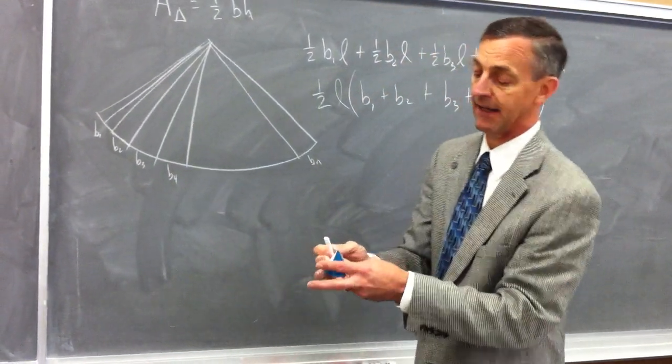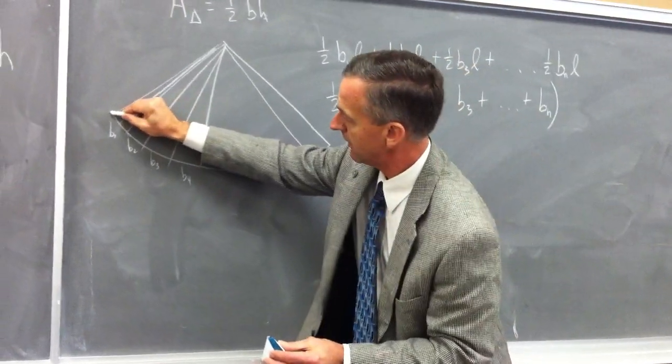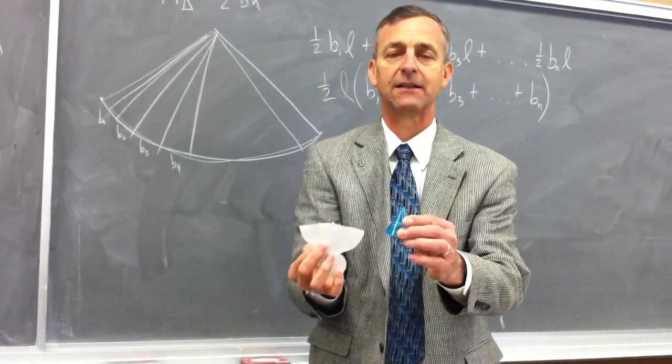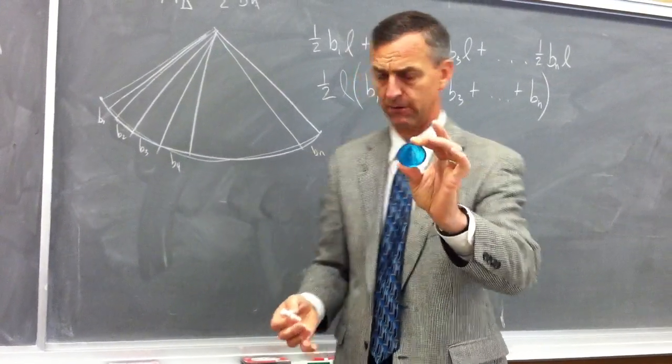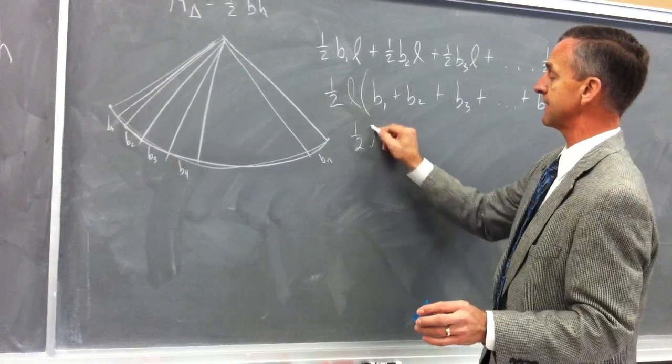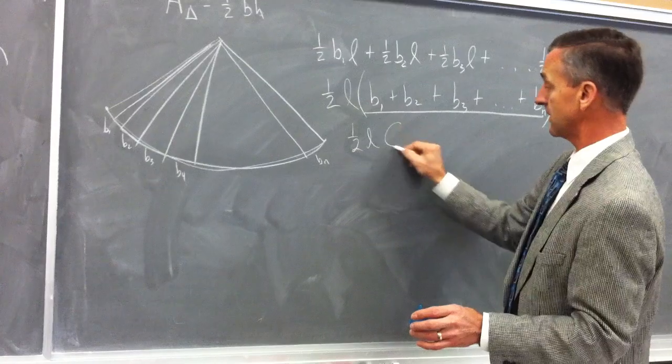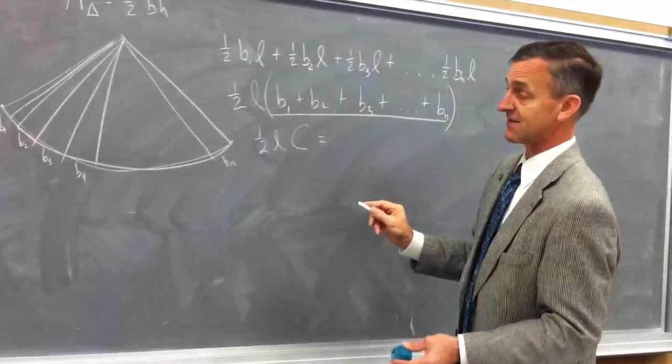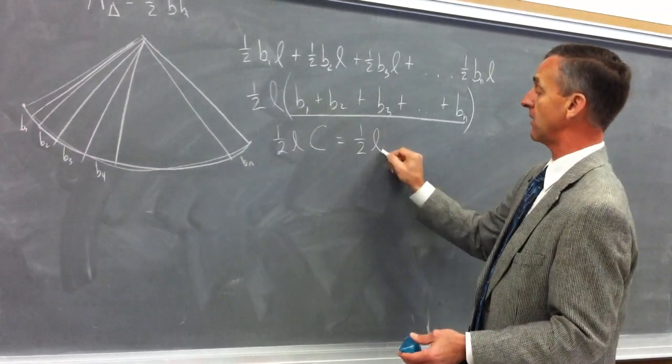If you'll take a look at our net again, this entire distance from here to here is simply the circumference of the base of this circle. So if this is the circumference I'm going to replace that big expression with circumference. But we know circumference from our formula list is just 2 pi r or pi d, so I'm going to go one half l and in place of c I'm going to put 2 pi r.